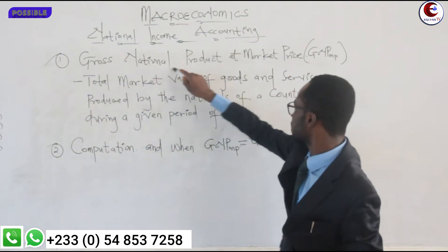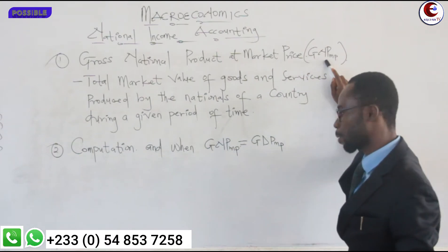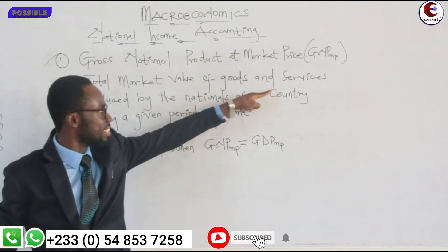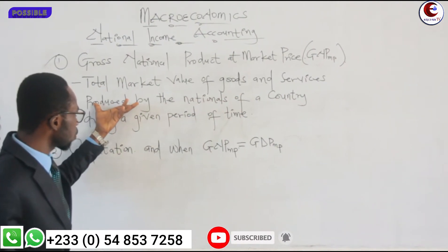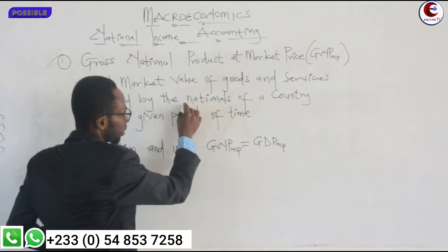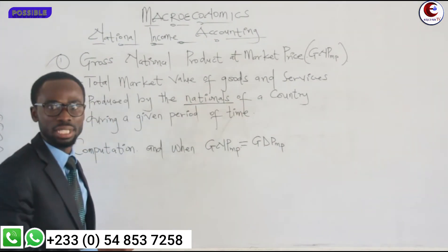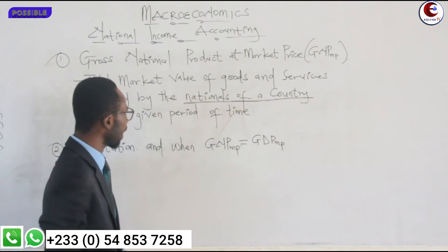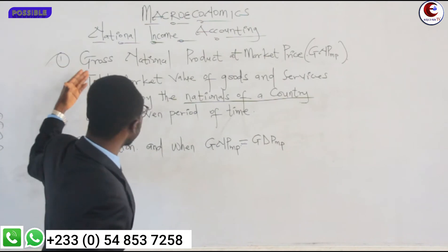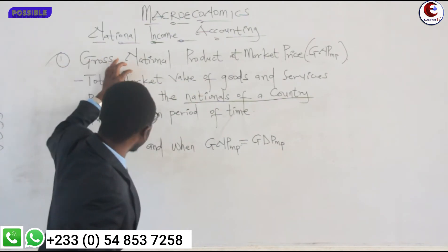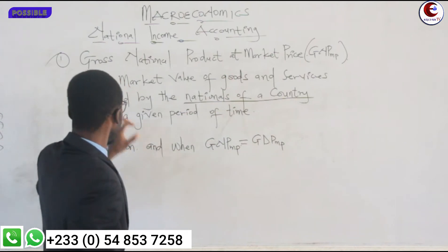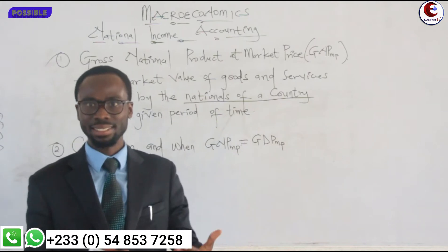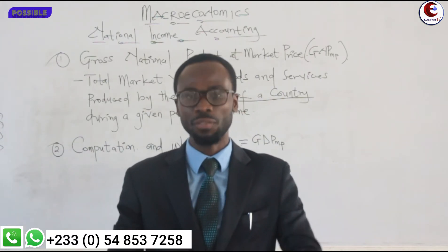Gross National Product, or GNP, is the total market value of goods and services produced by the nationals of a country. When we talk about nationals, we are talking about the citizens of a particular country.